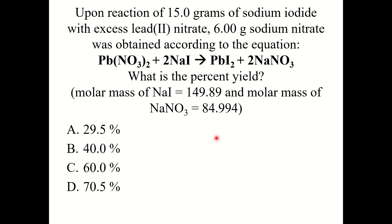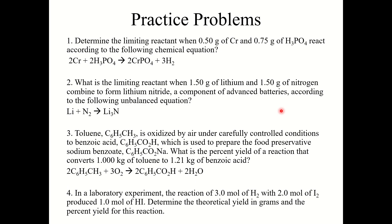One more knowledge check: upon reaction of 15 grams of sodium iodide with excess lead nitrate, 6 grams of sodium nitrate was obtained. The molar masses of sodium iodide and sodium nitrate are given. What is the percent yield? The final answer is D: 70.5%. The steps for this problem are essentially identical to the steps used to solve the previous problem.